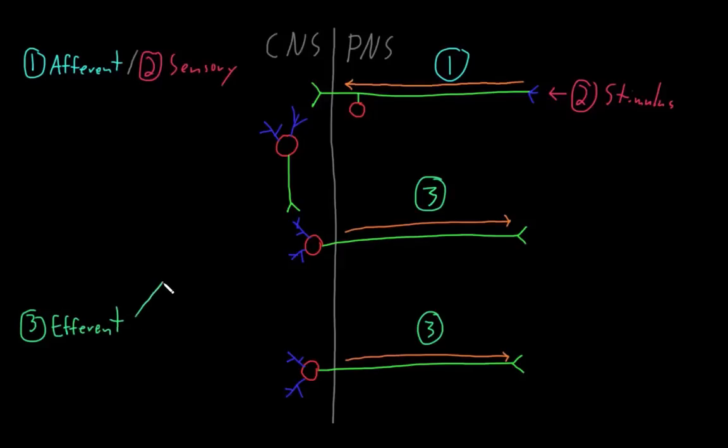There are two main kinds of efferent neurons. The first we call motor neurons. Which means movement. These are efferent neurons that control skeletal muscle, the main type of muscle that's attached to our skeleton that moves us around. These motor neurons are also called somatomotor neurons, or neurons of the somatic nervous system.